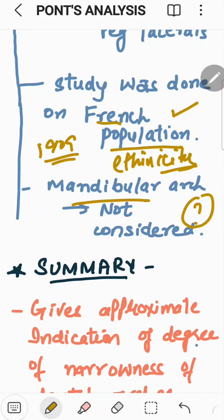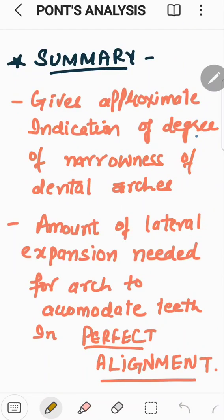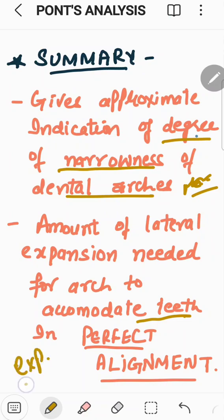So, these were the various drawbacks or setbacks associated with the PONTS analysis. To summarize, this analysis gives the approximate indication of degree of narrowness of the dental arches, particularly the maxillary arch. And number two, the amount of lateral expansion which is needed for the arch to accommodate teeth into the perfect alignment. Once we know that how much expansion is needed, accordingly, if we expand that arch to that particular value till the calculated value. So, in that case, we can easily align the teeth in the alveolar housing and that will lead to the proper alignment of teeth. So, this was all about the PONTS analysis.